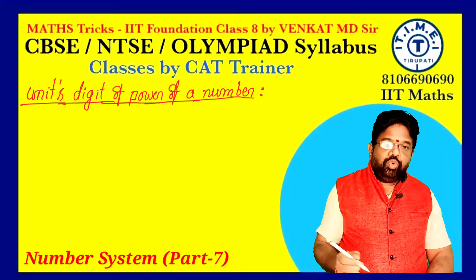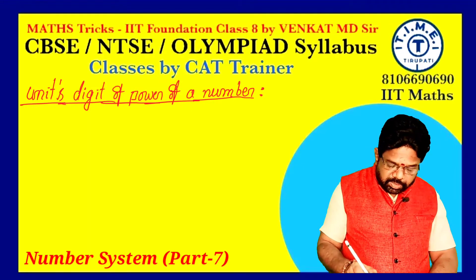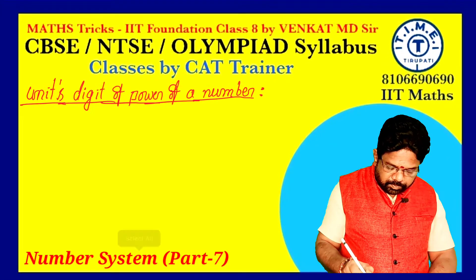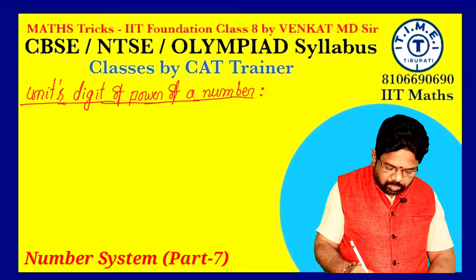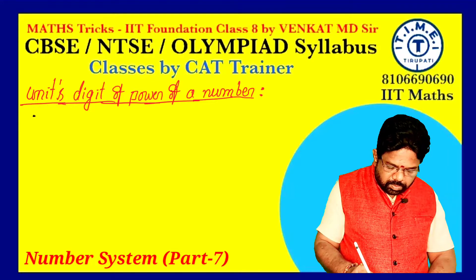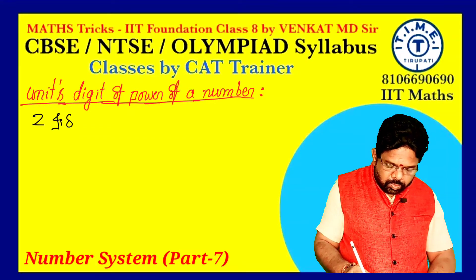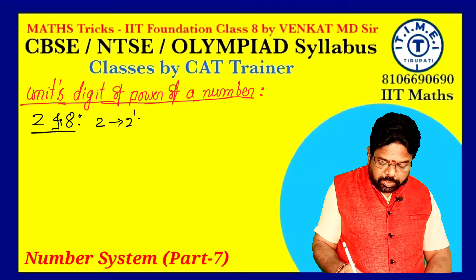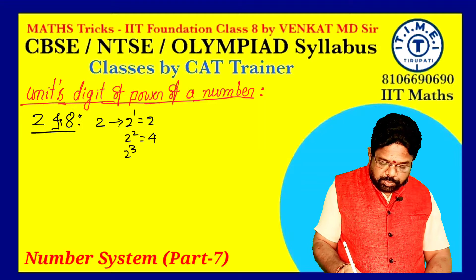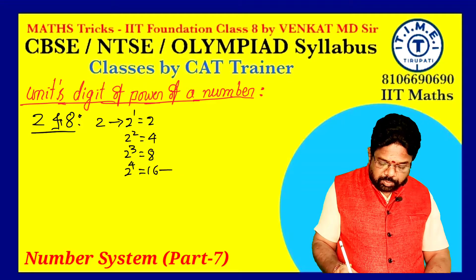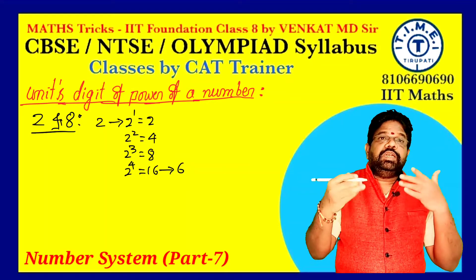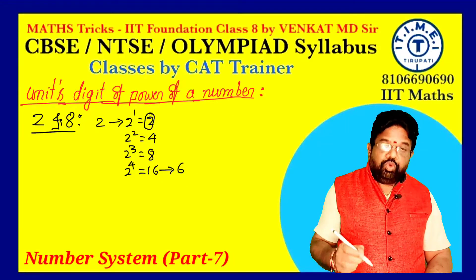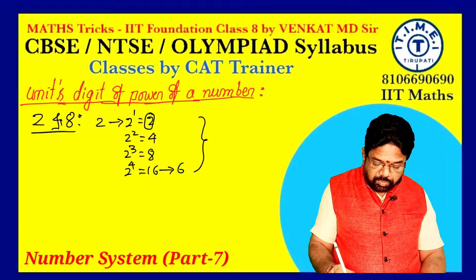Let's see why 2 and 8 are the same. First, checking 2 power values: 2^1 = 2, 2^2 = 4, 2^3 = 8, 2^4 = 16 (unit's digit 6), and 2^5 = 32 — unit's digit 2 is repeated. So the cycle restarts after power 4.